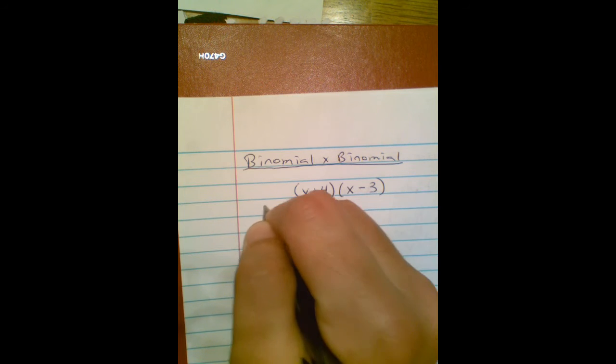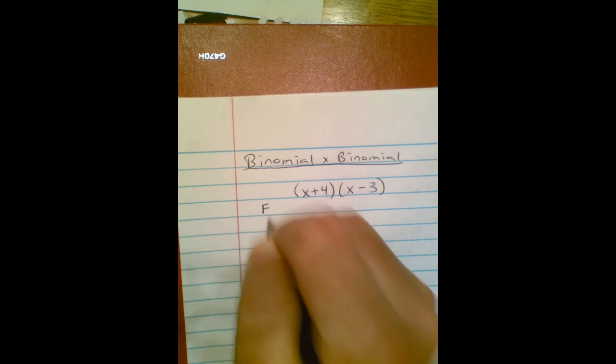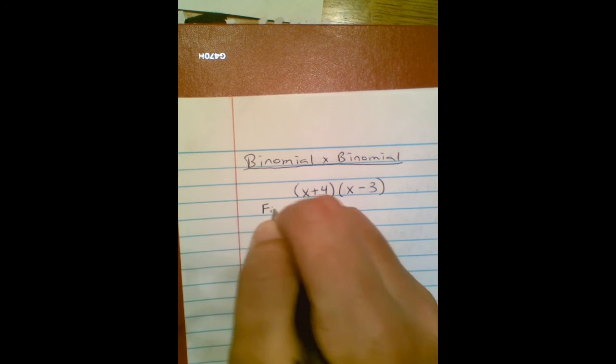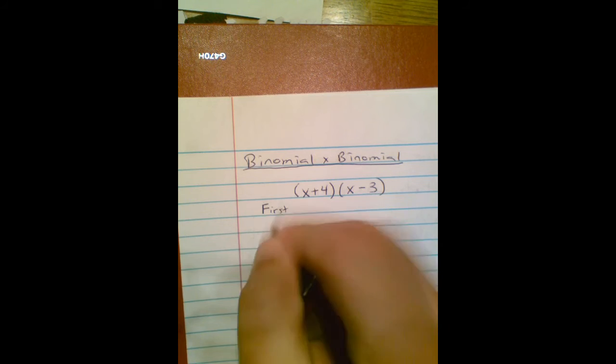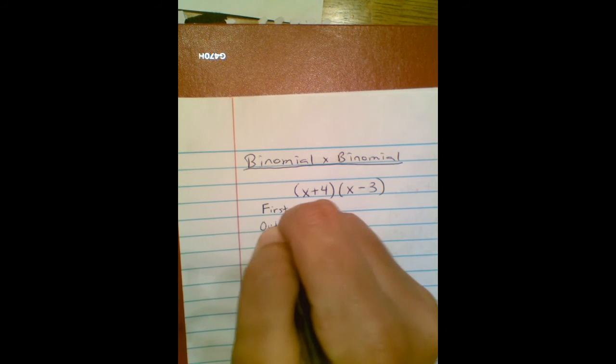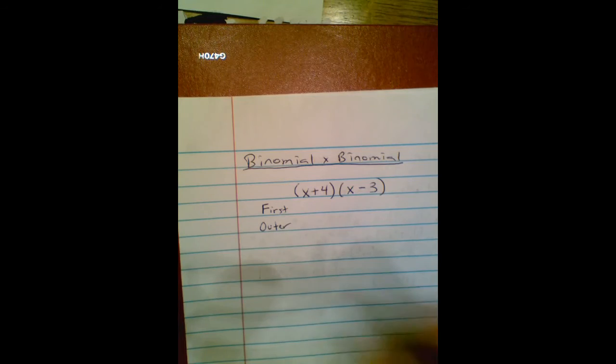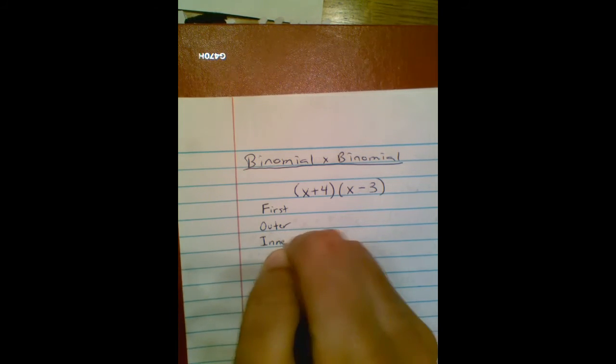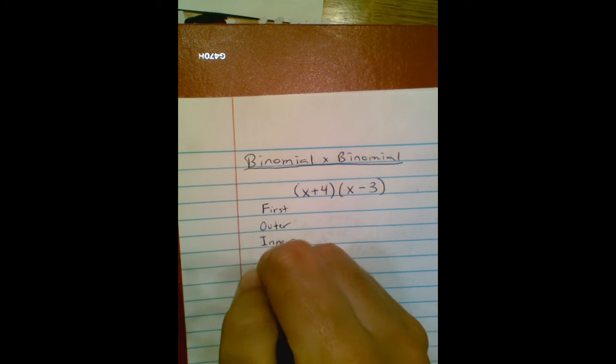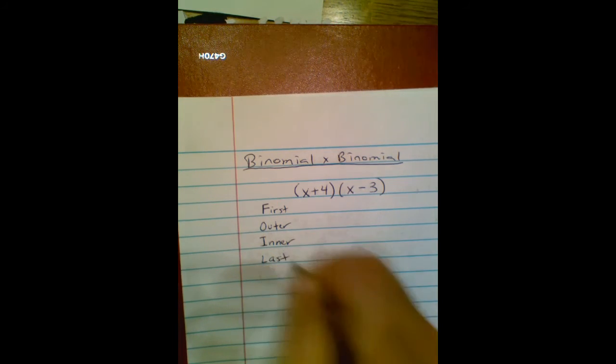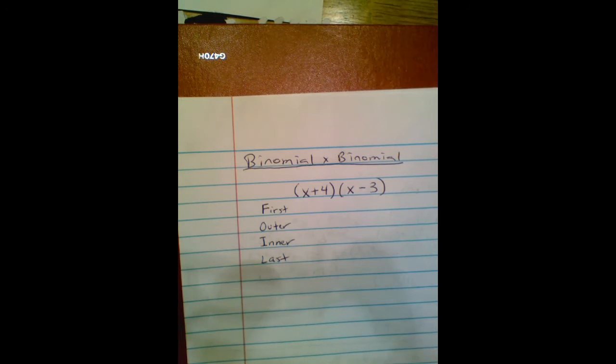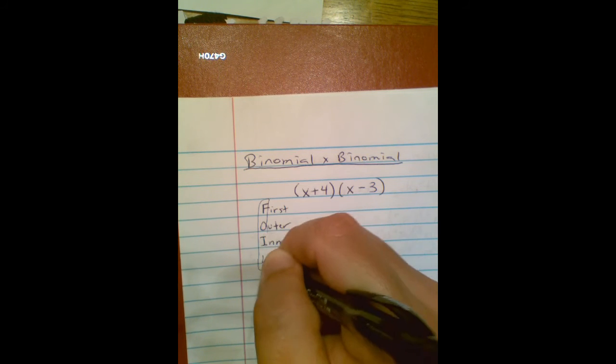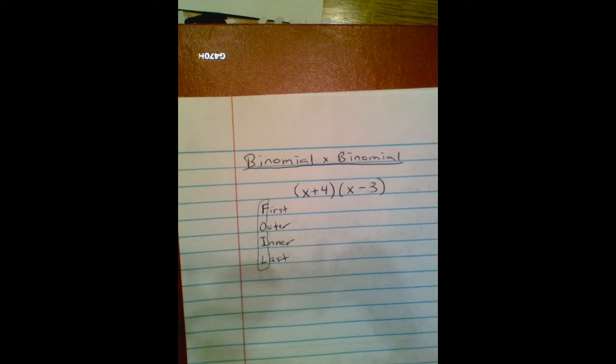What that works out to be is a little thing called First. Then we're going to take the Outer numbers, then the Inner numbers, and then the Last numbers or values there. And there is your word FOIL. That's what that stands for.